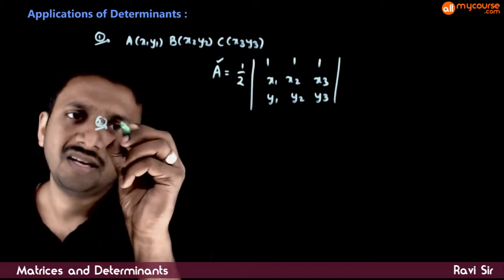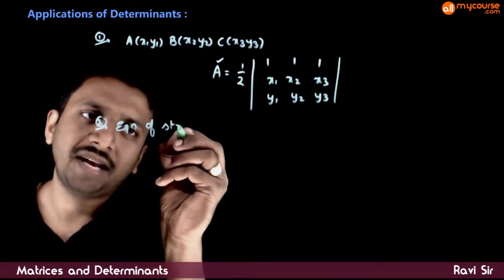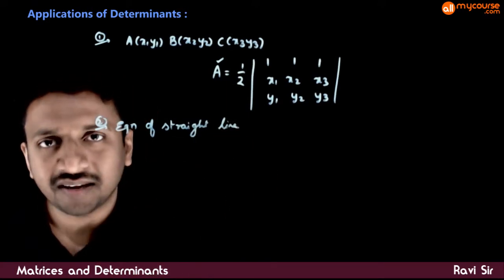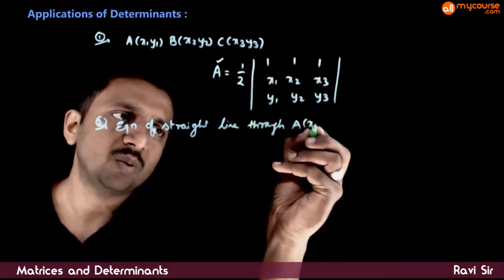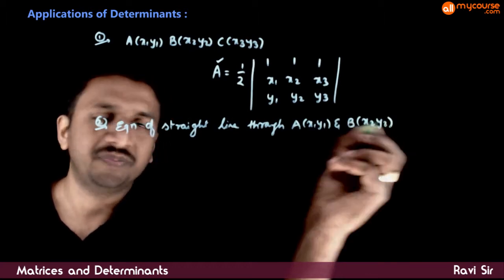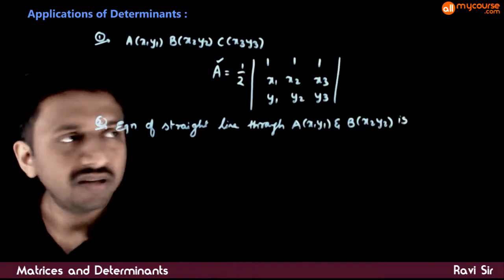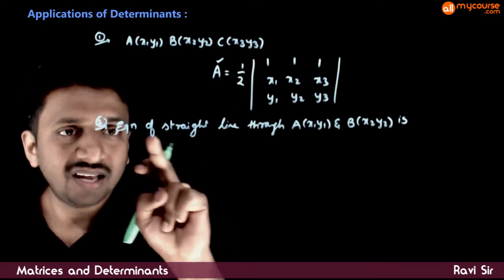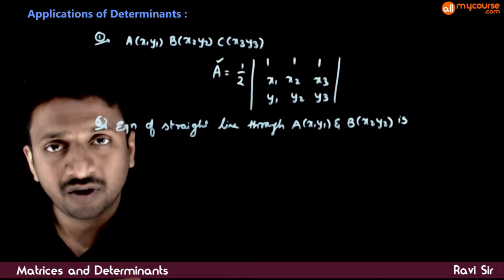Next, the equation of a straight line through points A(x1,y1) and B(x2,y2): if you have two given points, what is the equation of the straight line through these points? You can use the two-point form,